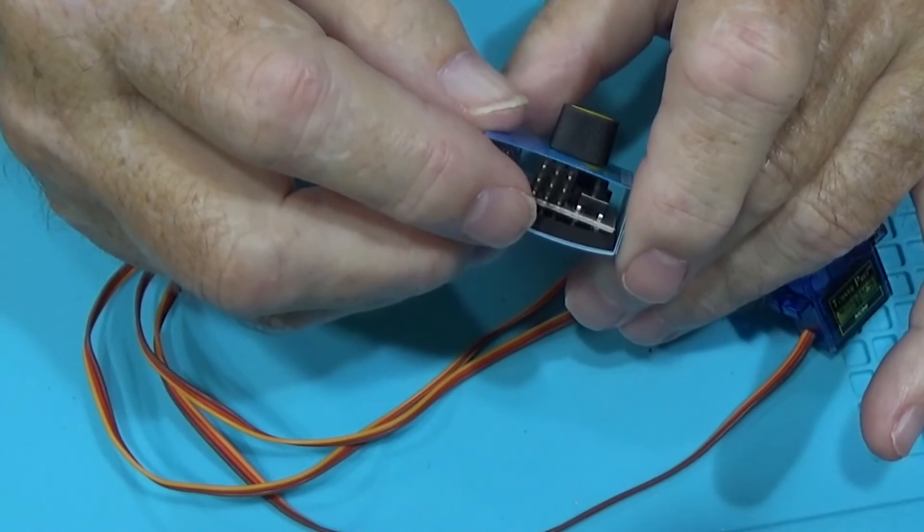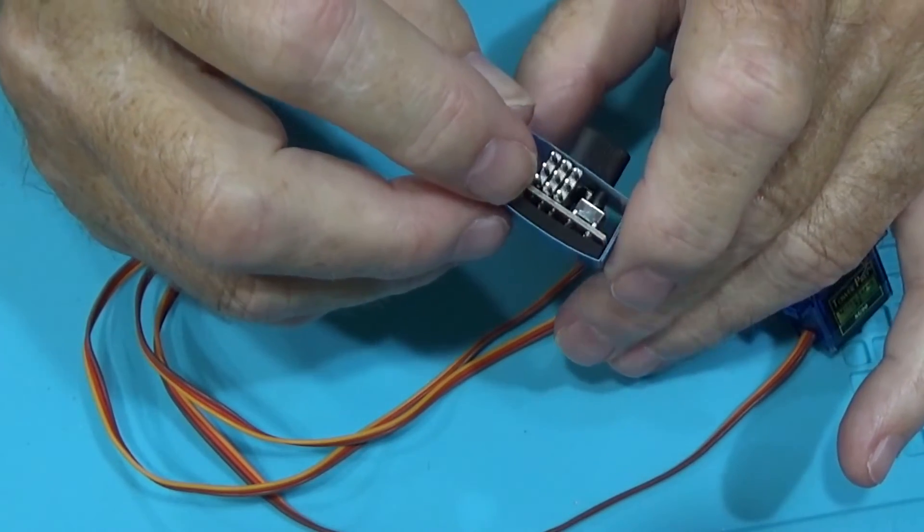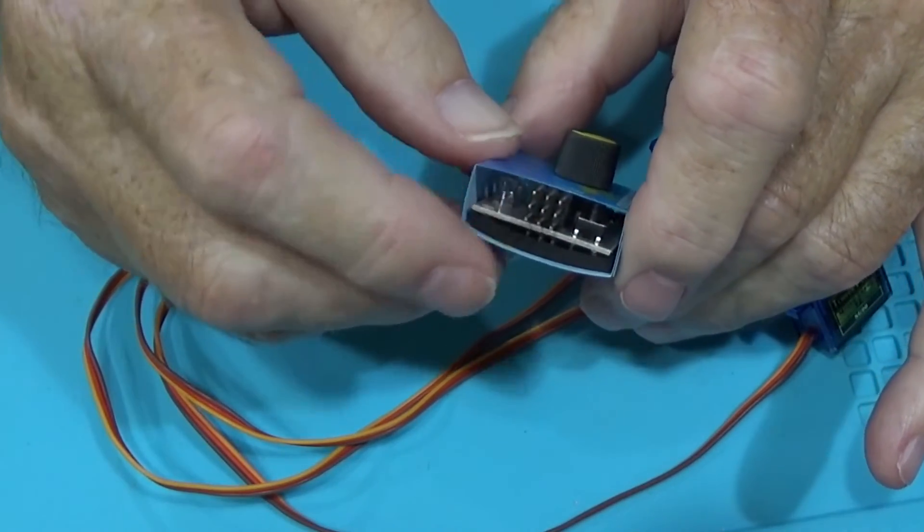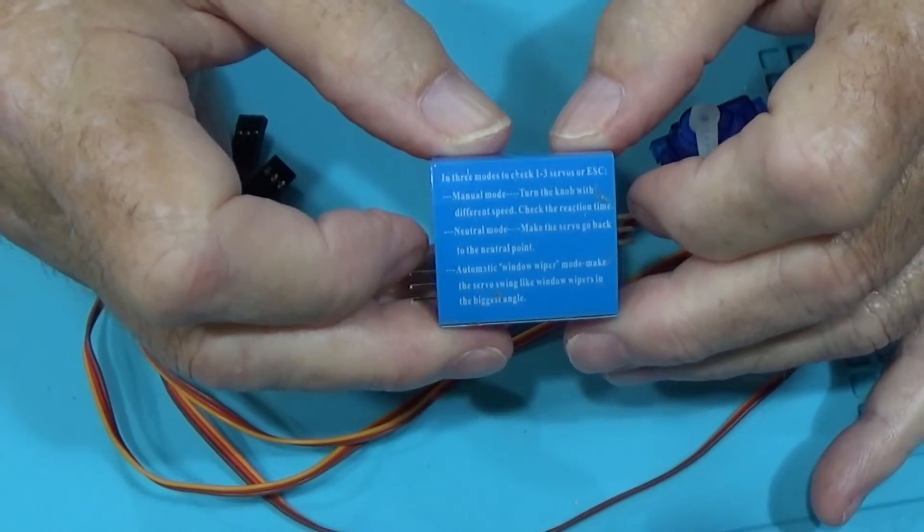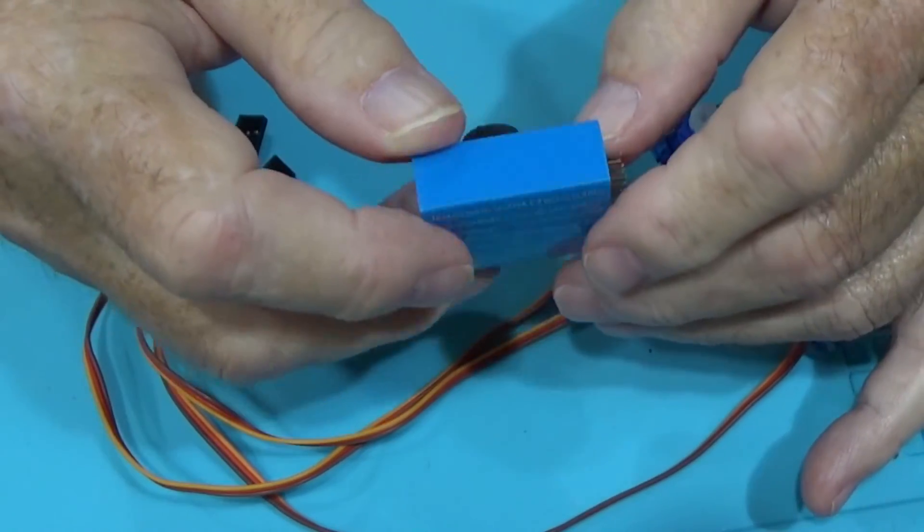And then on the other side you have three sets of leads right there where you could plug in your servo. And on the back it just gives you a little description of what it's capable of doing.